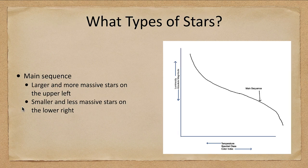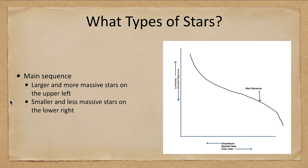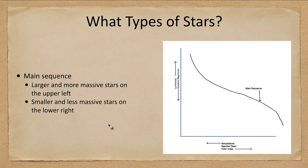Now, when we graph these, what do we find? Well, first of all, we find the main sequence, the larger and more massive stars to the upper left and the smaller and less massive stars down to the lower right.